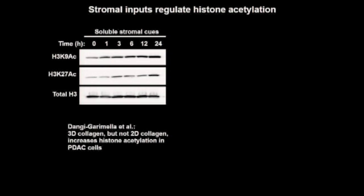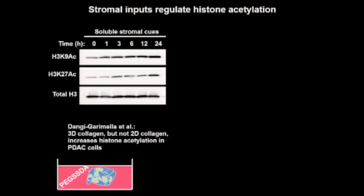I made a minor modification to my stromal culture system using a thiol-modified PEG-based crosslinker — still biologically inert, but the matrices can be broken apart using a reducing agent, N-acetylcysteine, enabling recovery of a single-cell suspension for ChIP or ChIP-seq.